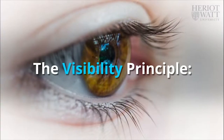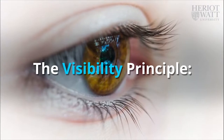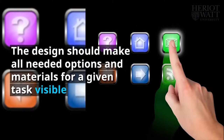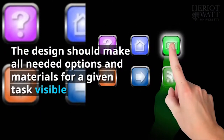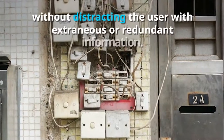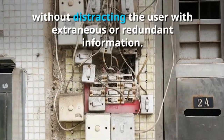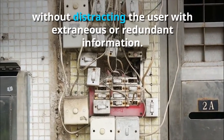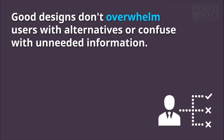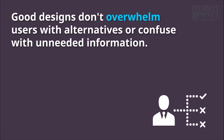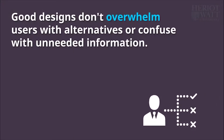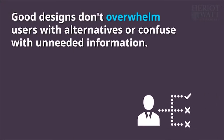The Visibility Principle: The design should make all needed options and materials for a given task visible without distracting the user with extraneous or redundant information. Good designs don't overwhelm users with alternatives or confuse them with unneeded information.